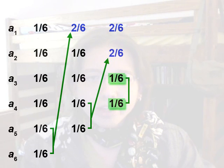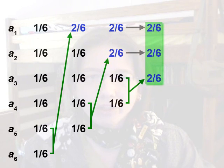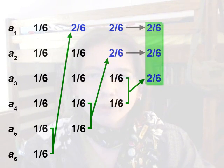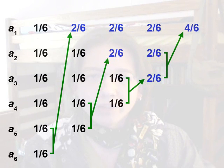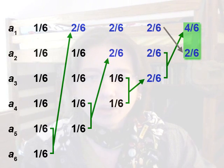Once again, we combine the two smallest probabilities into 2 in 6, and create another list with only three items — all of them are 2 in 6. And again, we combine the two on the bottom to get 4 in 6, and create another list with only two items: 4 in 6 at the top and 2 in 6 underneath. We stop here — we stop when we end up with a list of only two items.